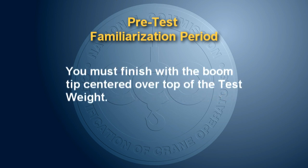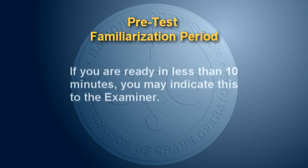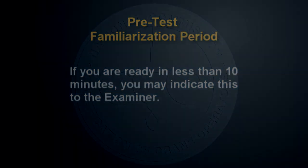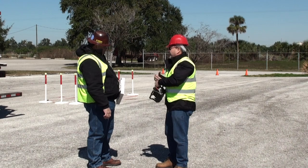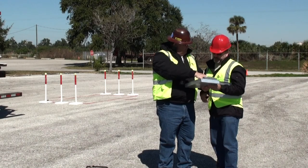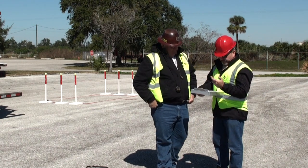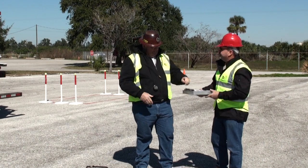You must finish the pre-test familiarization period with the boom tip centered over top of the test weight. The examiner will notify you when there are 5 and 1 minutes remaining. If you are ready in less than 10 minutes, you may indicate this to the examiner. If at the end of the pre-test familiarization period you feel you are not ready to take the examination, you should notify the examiner. You will have disqualified yourself from taking the examination at this time and you will be required to sign to that effect on the candidate score sheet.